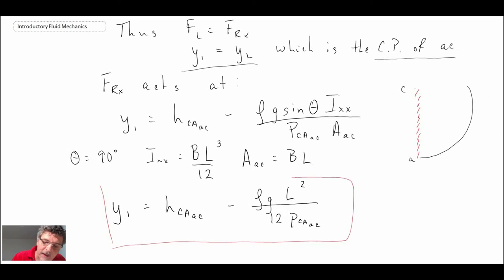We get Y1 - it's just the center of area of AC modified. If you recall earlier, if this is the center of area here, the center of pressure is going to be a little bit below, and that determines Y1.